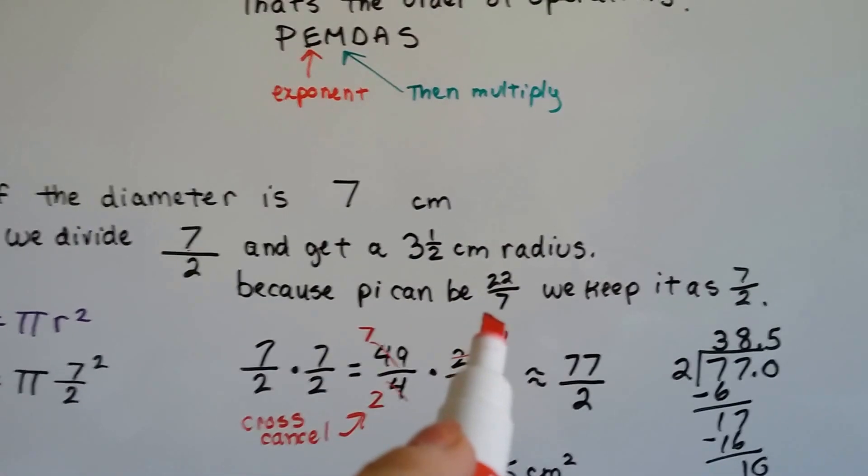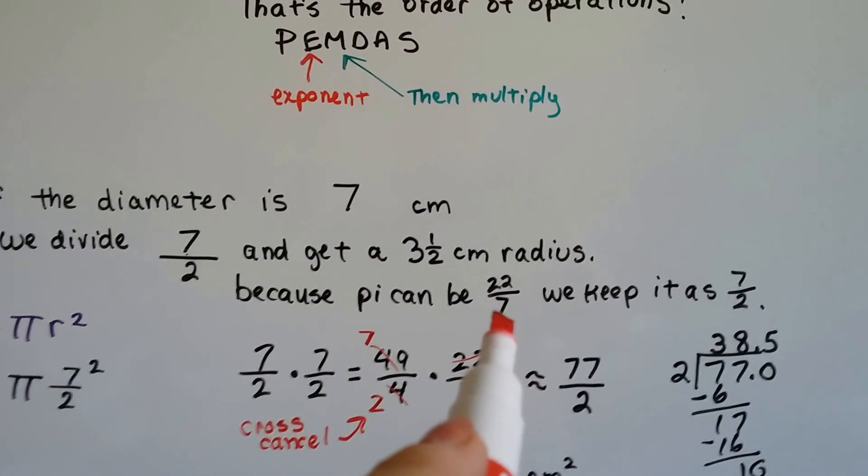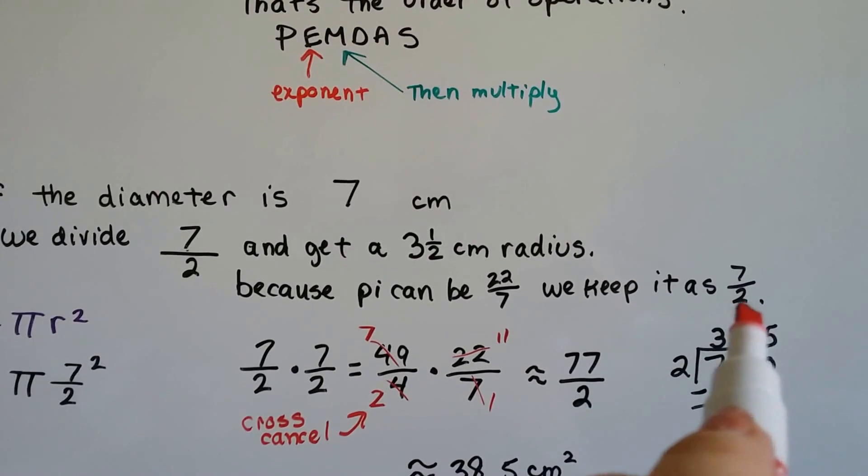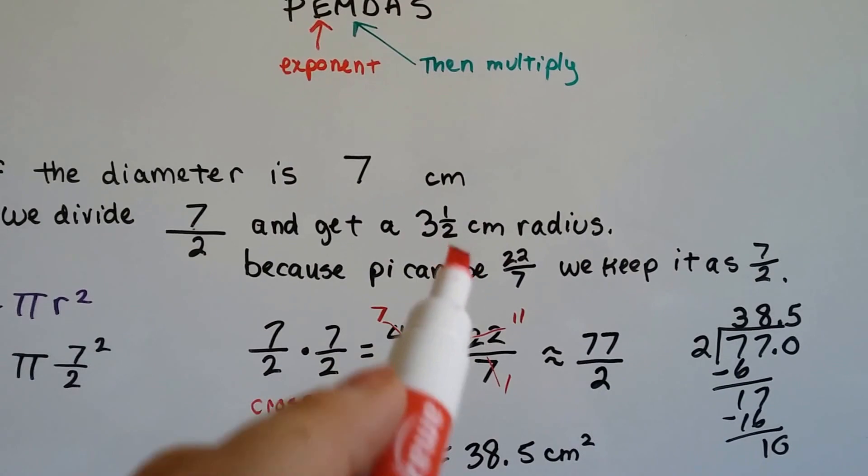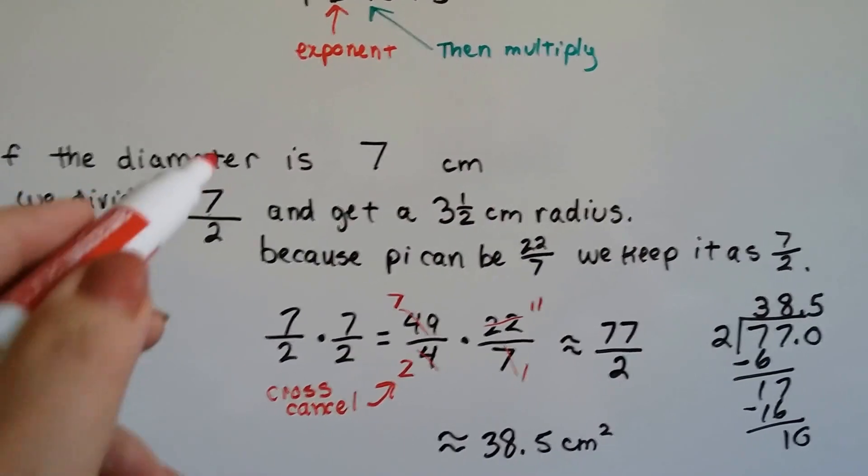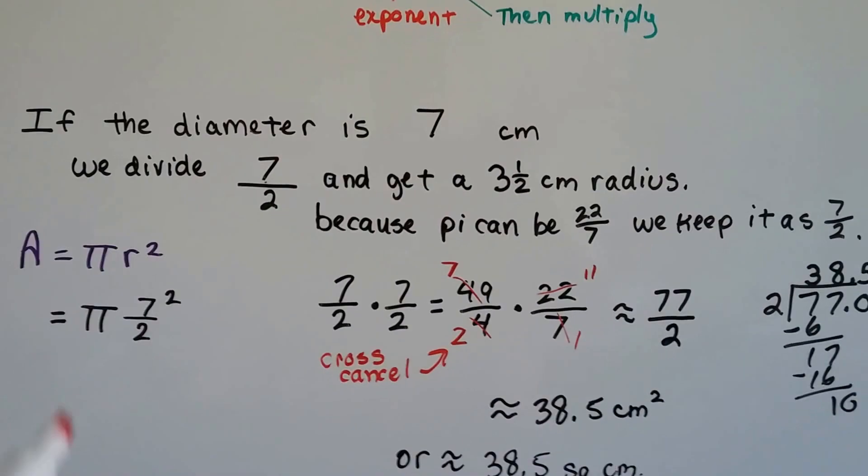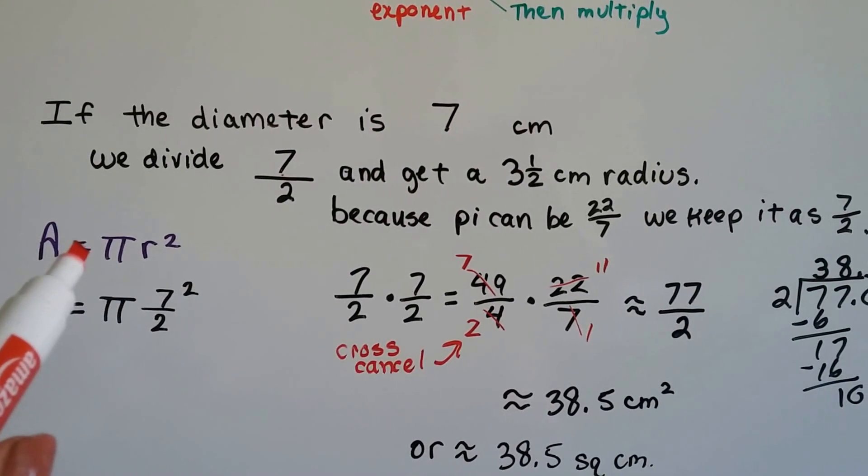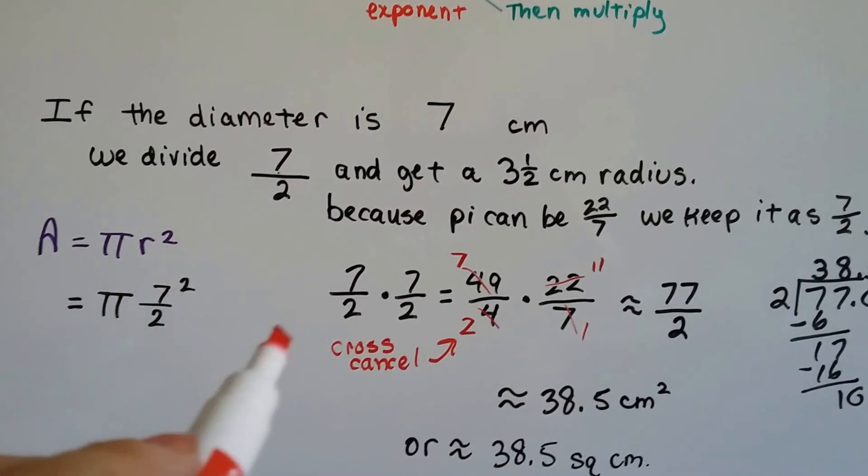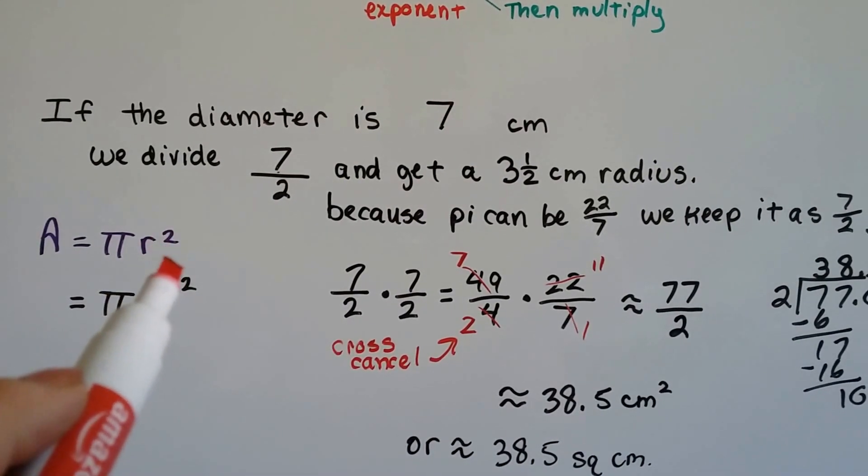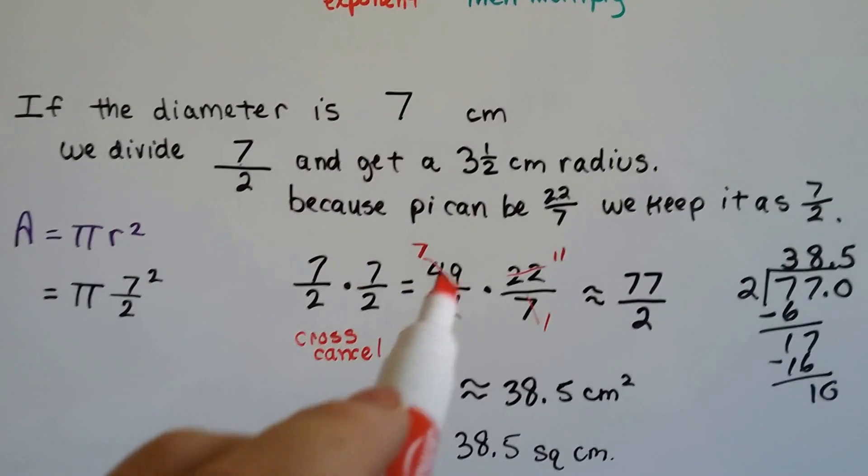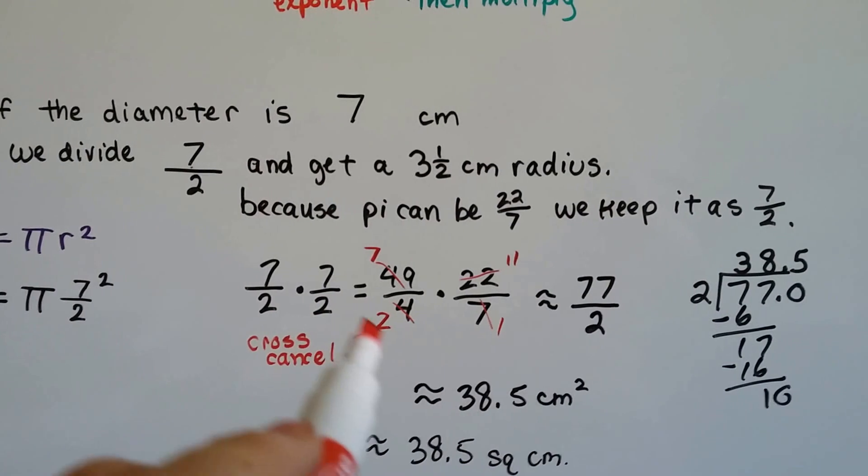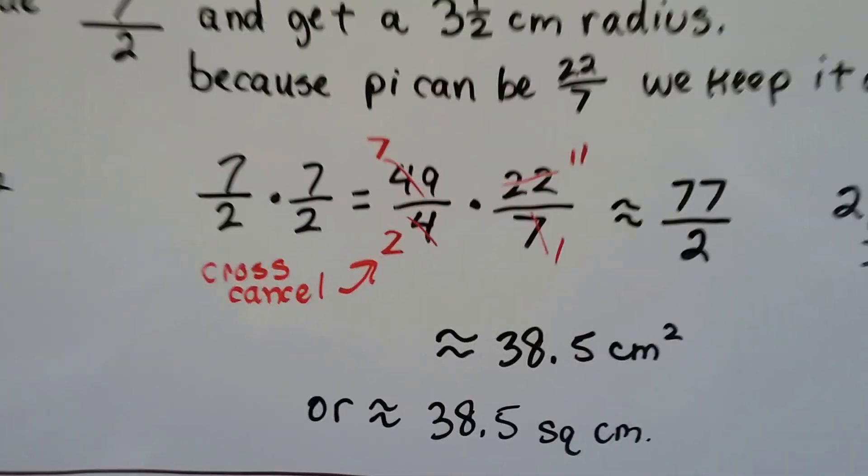Well, because pi can be multiplied as 22 over 7, we just keep it as 7 over 2. See, 3 times 2 is 6, plus the one numerator is 7 over the 2, so we'll just keep it this way. Area is equal to pi r squared, so we need to multiply 7 over 2 times 7 over 2. 7 times 7 is 49, and 2 times 2 is 4, so now we have 49 over 4.